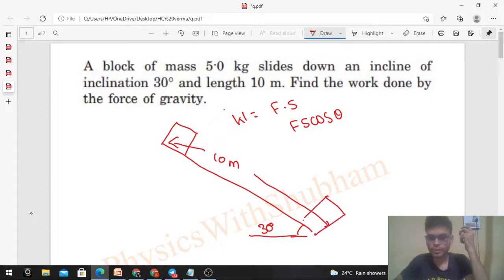So if you see, the force acting is vertically downward, right? The gravitational force mg is always vertically downward. And what is the displacement? 10 meters along the inclined surface. So displacement is along the inclined surface.